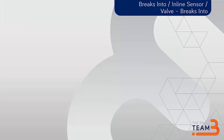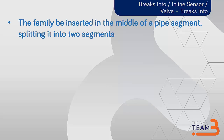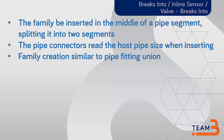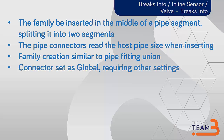The breaks-into and inline connector options: this family will be inserted into a pipe and will split it into segments, like a union for example. The pipe connectors can read the pipe size and adjust the size accordingly when inserting; after inserted they will not change. The family creation is similar to a pipe fitting union — you draw it horizontally with the axis on the reference plane, with a main connector on the left and a second connector on the right. The connectors can be set as global and require other settings, especially the K-coefficient factors for pressure loss or pressure drops.